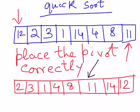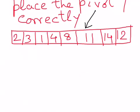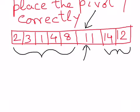Why is this correct? Because no matter what happens in the left part of the array, the position of 11 is not going to change. And no matter what happens in the right part, the position of 11 is not going to change either. So at every divide step we are positioning one element correctly in the array, and this continues recursively.